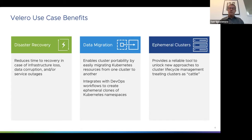Running 'velero backup describe wp --details' shows additional information. The top section shows the spec for the backup including a namespaces section defining which namespaces were included. Scrolling down, there's a persistent volumes section describing the PVCs that were backed up — Velero found two different PVCs being used by the wp namespace and for each one created a snapshot using the GCP APIs, with references to those snapshot IDs and additional metadata useful for restoration.